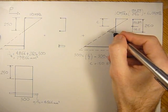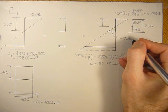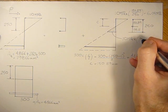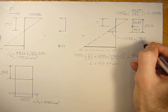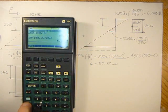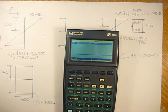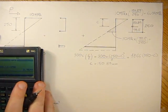And then we can do the same thing on these bottom fibers, we can take 10 MPa, times 99.11 millimeters, over 250, and we can say, 10 times 99.11, divided by 250, equals 3.96 MPa.